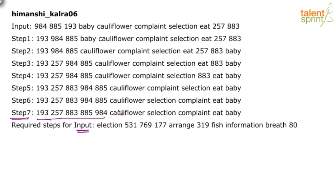Cauliflower has vowels A, U, I, O, E — a fun fact: cauliflower is one of those words that contains all five vowels. It's interesting to know, though it's unlikely to be asked directly in your exam.